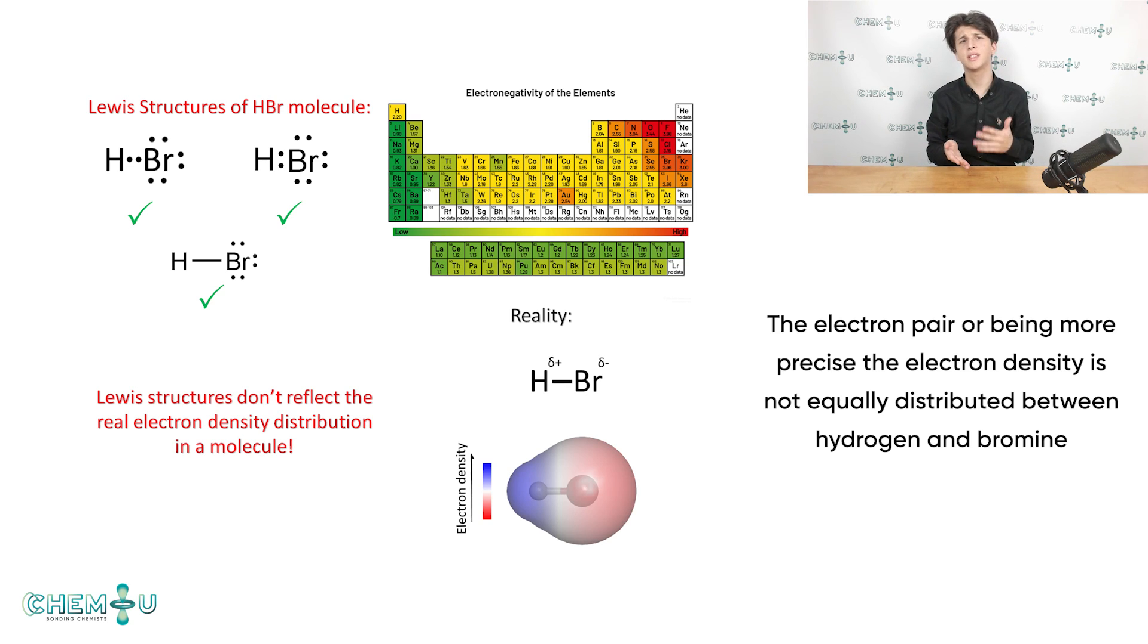But the Lewis structures don't give any clue about this unequal distribution. By the way, chemists and physicists call this phenomena polarization. Now we need to recall a very important fact. The electrons are negatively charged. And if there is a much higher probability to find them in the proximity to bromine, it is partially negatively charged. On the other hand, the hydrogen atom should have a positive partial charge of the same magnitude because the overall charge of the molecule is zero. It means that if we sum up all partial charges of the atoms in a neutral molecule, we should obtain zero.